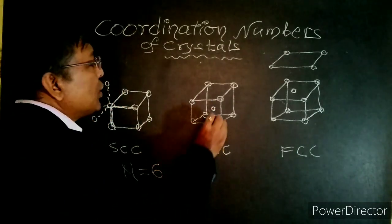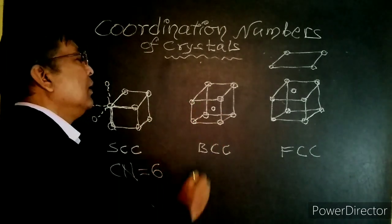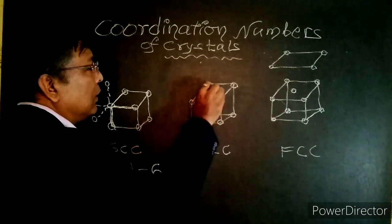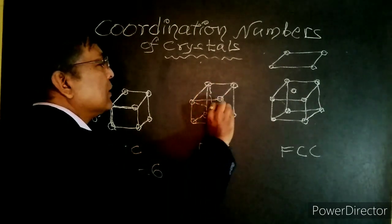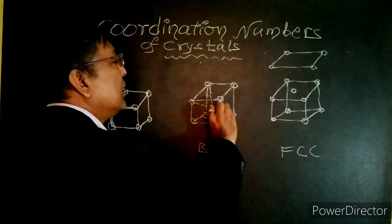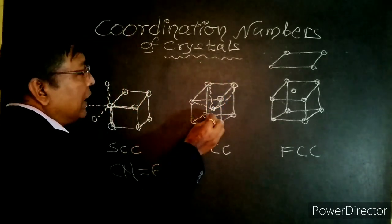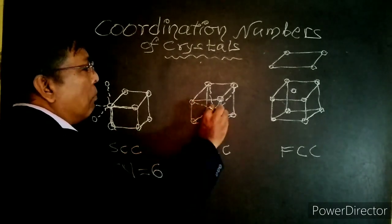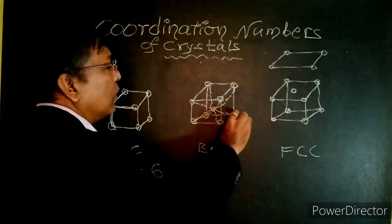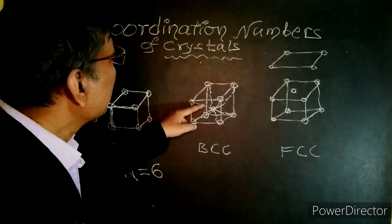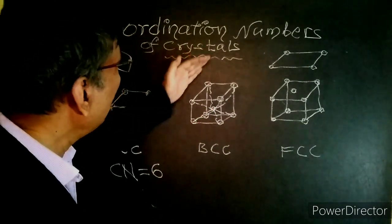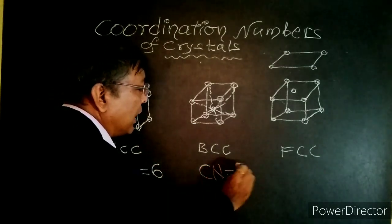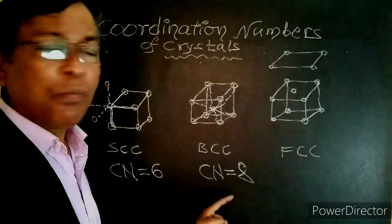For body centered cubic crystal, the body centered particle has 4 nearest neighbors at the top layer of the unit cell and 4 nearest neighbors at the bottom layer. Therefore, counting all nearest neighbors: 4 plus 4 equals 8. The coordination number of BCC is 8.